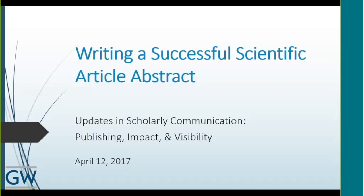Dr. Linda Whirling is the associate dean for graduate education in the George Washington University School of Medicine and Health Sciences, and also a professor of pharmacology and physiology at GW. She earned her PhD in pharmacology specializing in neuropharmacology from Duke University. She is director of the GW Institute for Biomedical Sciences, directs a three-course career development series for PhD students including scientific writing, biomedical ethics, and career planning, teaches in the medical curriculum, and has published over 70 scientific articles.